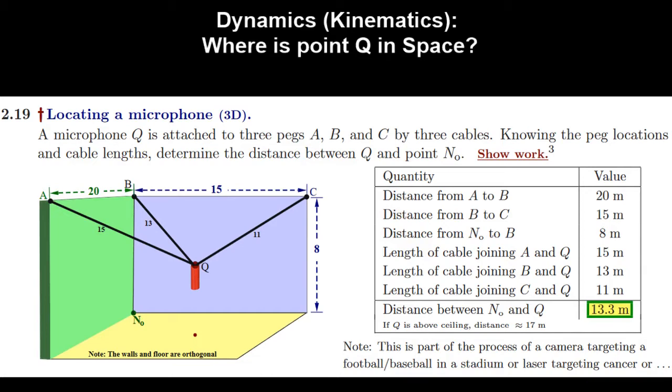Now the problem tells us that the distance between N0 and Q is going to be 13.3 meters. What's more important is knowing how to get there and showing our work. So before we dive in, let's talk about the context of this problem.